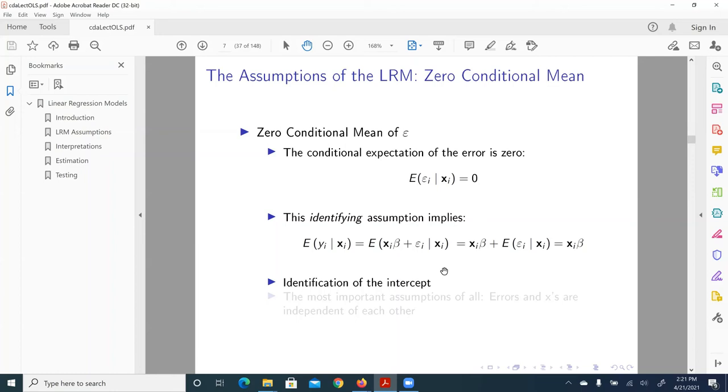Once we impose this assumption, that is the error term, the conditional mean of error, conditional on x is zero, then the intercept is identified. And also, why this assumption is important? Because it makes sure that the error terms, the disturbances, and x's, they're independent of each other. And this makes our results consistent, our estimation consistent, that is accurate, relatively speaking. If this assumption does not hold, then the OLS regression framework collapses.